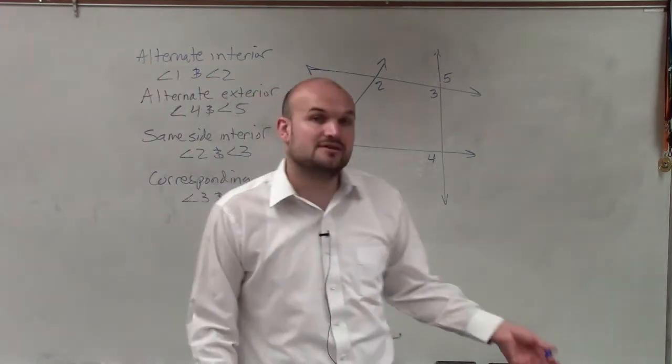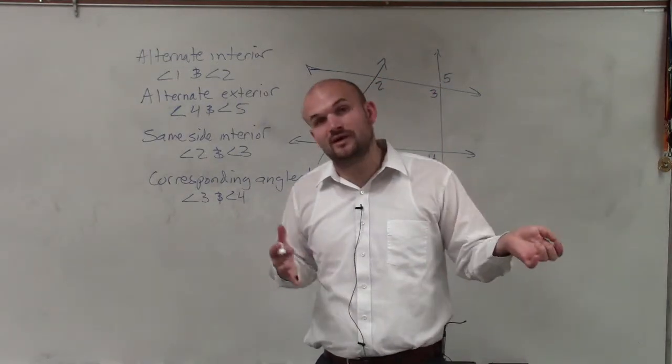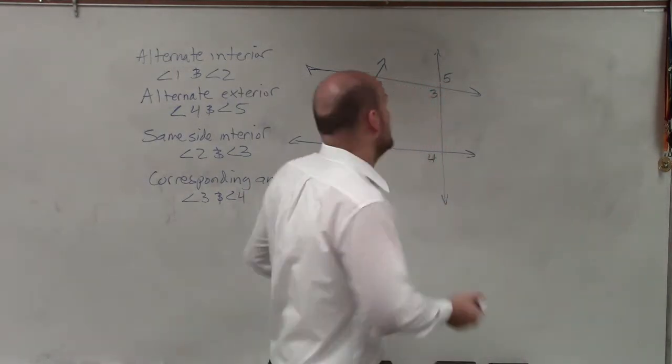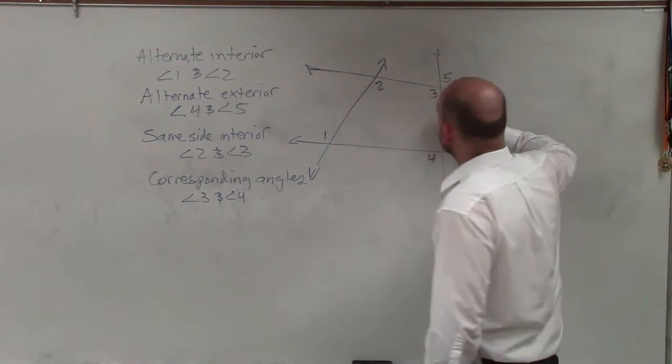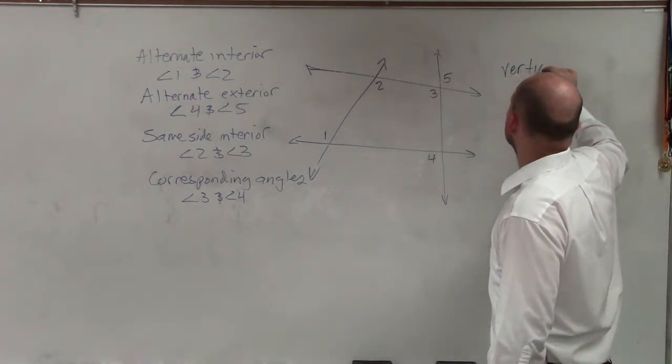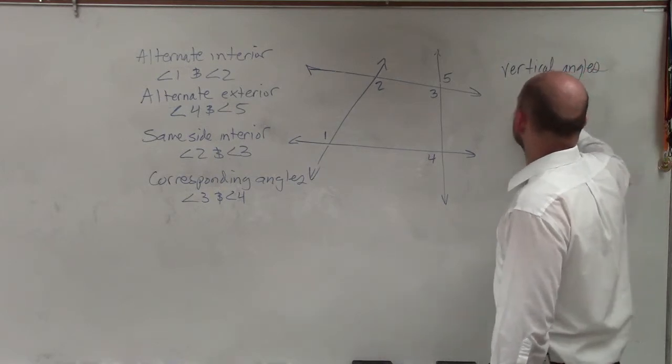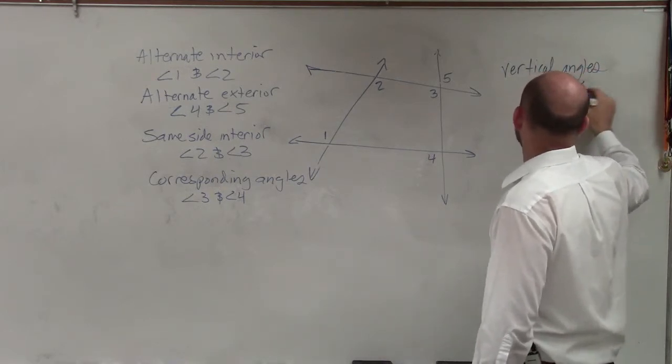Now, lastly, we can also talk about relationships of angles that do not have to deal with two lines and a transversal. For instance, you can see at any intersection, whenever you have angles that are directly across from each other, we call those vertical angles. And so you could say angle three and angle five.